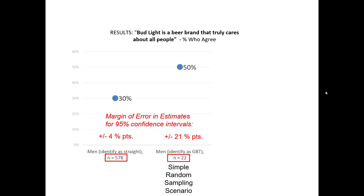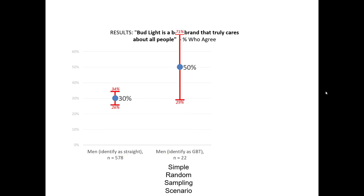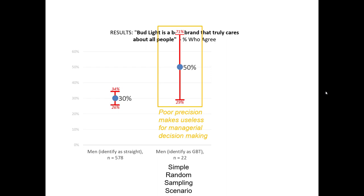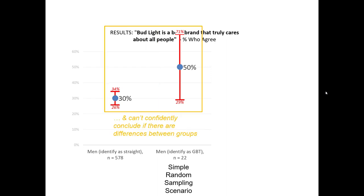With the margin of error depicted visually, we can clearly see the problem of our small sample size. With this lack of precision, there's really no useful information here for a marketing manager. Because of the lack of precision in the small subgroup, we really can't draw any meaningful conclusions about whether or not these two groups are actually different once we account for statistical uncertainty.